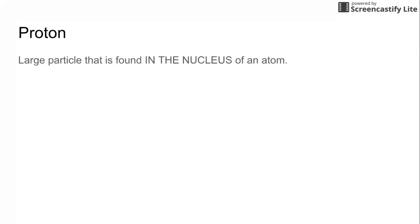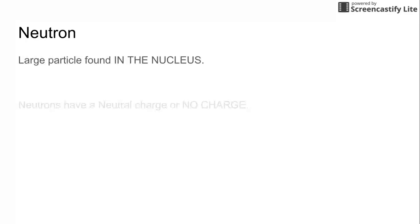So the proton is a large particle that's found in the nucleus of the atom and they have a positive charge. Proton equals positive. And the neutron is a large particle that's also found in the nucleus and they have a neutral charge or no charge. Neutron equals no charge or neutral.